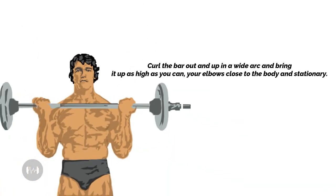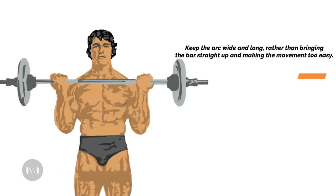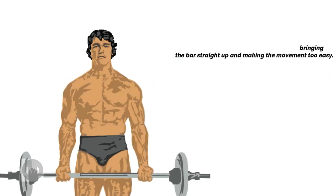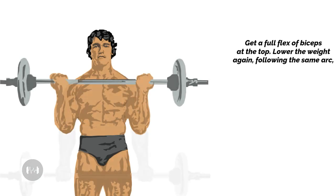Second, curl the bar out and up in a wide arc and bring it up as high as you can, your elbows close to the body and stationary. Keep the arc wide and long, rather than bringing the bar straight up and making the movement too easy. Get a full flex of biceps at the top.